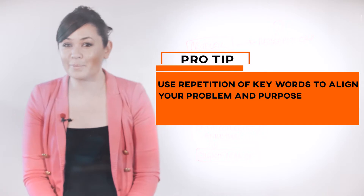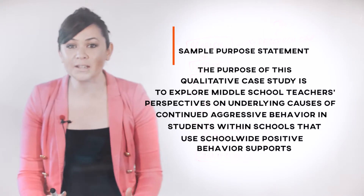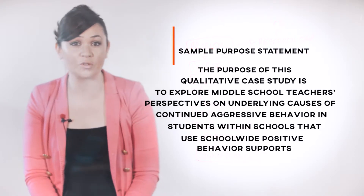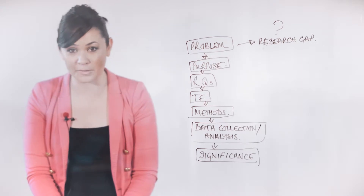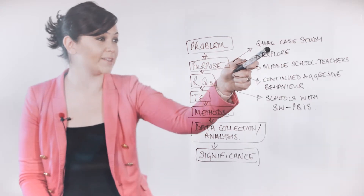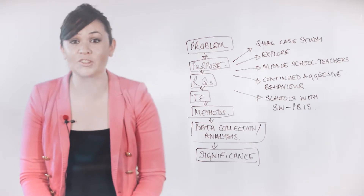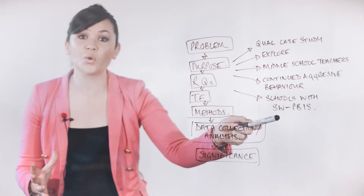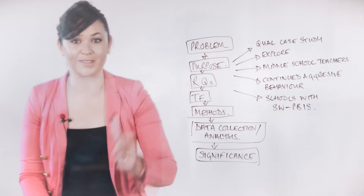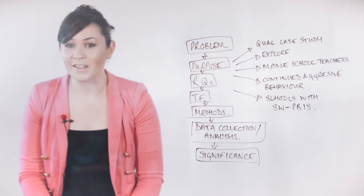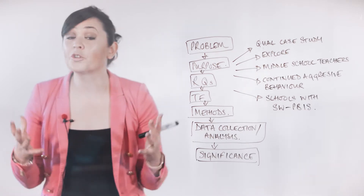Using the example from before, an appropriate purpose statement might be: 'The purpose of this qualitative case study is to explore middle school teachers' perspectives on underlying causes of continued aggressive behavior in students within schools that use school-wide positive behavior supports.' The key pieces of this purpose statement are: qualitative case study, the word 'explore,' middle school teachers, continued aggressive behavior in students, and schools that use school-wide positive behavior supports. The purpose statement specifies an intent to examine the very same problem described in the problem statement — this is essential for achieving alignment.